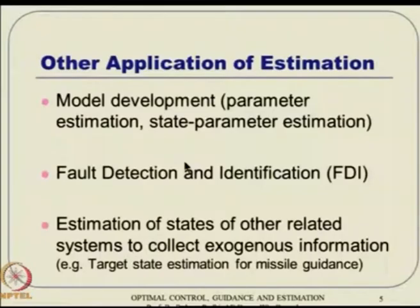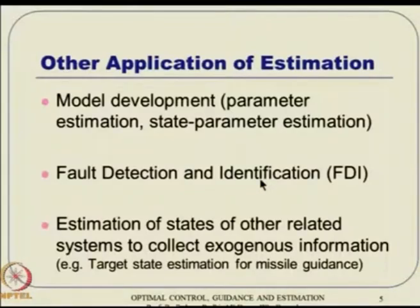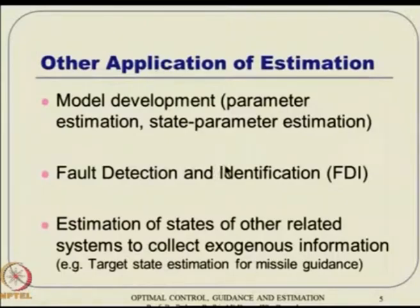Sometimes you are also interested in fault detection and identification. If you estimate the state, simply observing the numbers can tell us many things about the status of the plant or system, and it can turn out that there is something wrong — that is the fault detection. For example, in a nuclear power plant, if you think about temperature monitoring, if the temperature keeps rising to some level, it is probably very dangerous and you need to shut down the plant. So that kind of information can be obtained using FDI techniques — fault detection and identification.